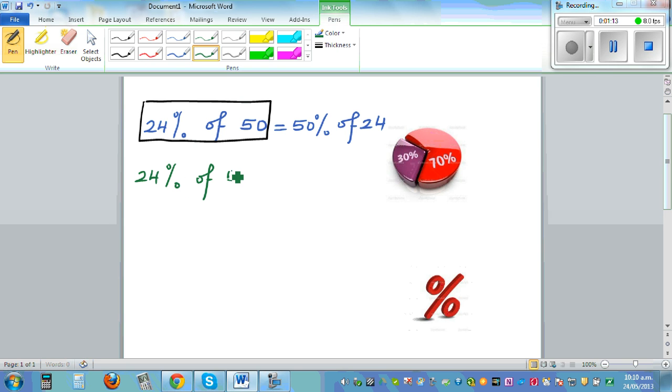I always like to find 10% and 1%, and if you know 10% and 1% you can find any percent. So 10% is one-tenth, so 10% of 50 is 5. So 1% should be how much? Should be again one-tenth of this which is 0.5.